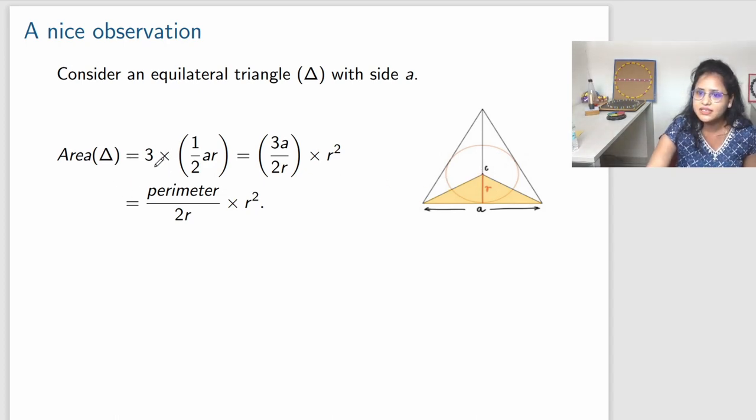So the area of the triangle is three times the area of the smaller triangle. The base is A, height is R. So this is half AR. This we know the area of a triangle is half times base times the height. So if I write it in another way, I can write it as 3A divided by 2R times R square.